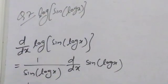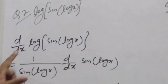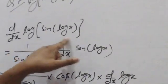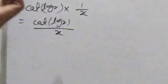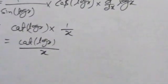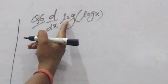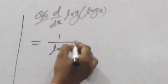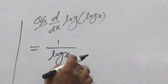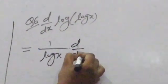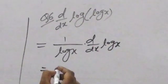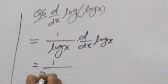This was solved using the chain rule. Log x is the inner function, sine is the outer function, and the differentiation of log x is 1/x. So the answer is cot(log x) / x. For the next part: d/dx of log(log x) — log is the outer function, log x is the inner function, giving 1 upon (x times log x).